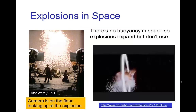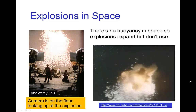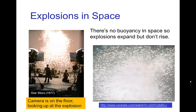Now, when special effects produces an explosion without using computer graphics — when they actually film an explosion — as we saw, an explosion naturally has a rising plume due to the convection of the hot air. Now if you want to film something that appears as if it's an explosion in space, then the trick is to put the camera on the floor and have it looking up at the explosion. You typically don't want to put the camera on the ceiling looking down because there's often a plume of smoke coming up. In order to avoid looking at the smoke, you put the camera on the floor. This is how the original Star Wars Death Star explosion was filmed.